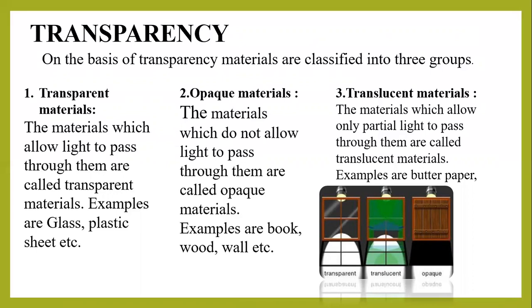Three, translucent materials. The materials which allow only partial light to pass through them are called translucent materials. For example, butter paper, frosted glass, oily paper, etc. Students, about these types of materials you have already studied in the chapter on light.